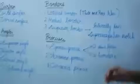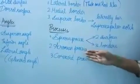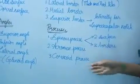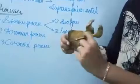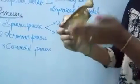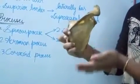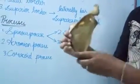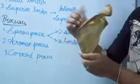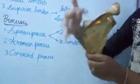Now coming to the processes. There are three processes: the spinous process, acromion process, and coracoid process. The spinous process is present on the dorsal surface of the scapula and divides the scapula into the supraspinous fossa and the infraspinous fossa.